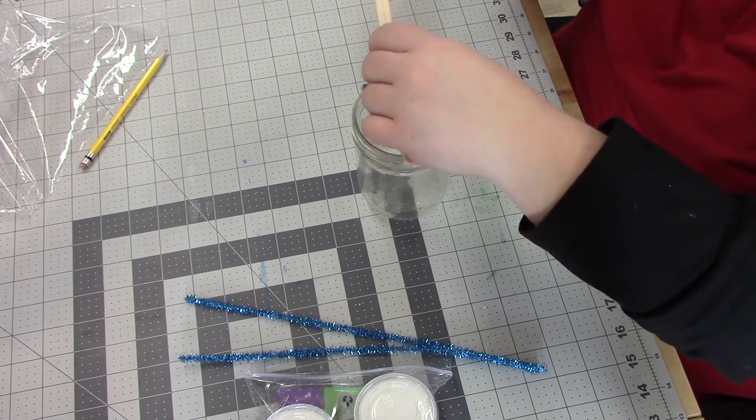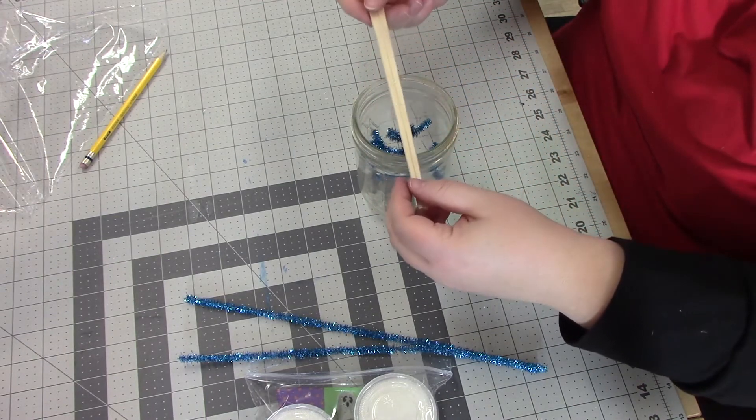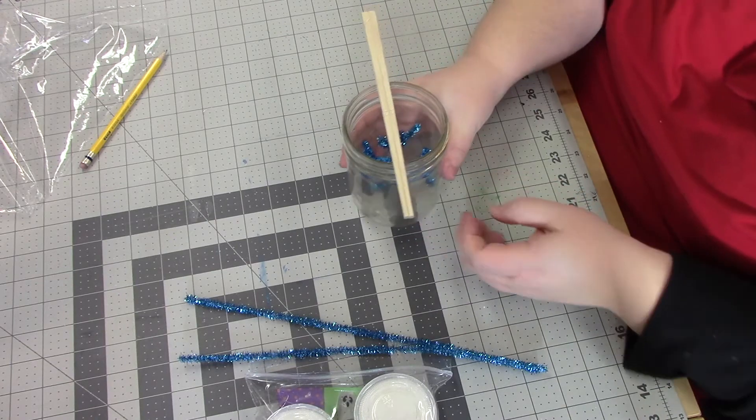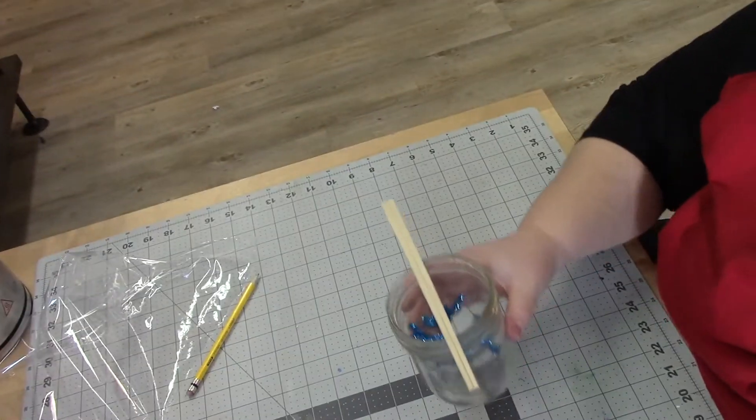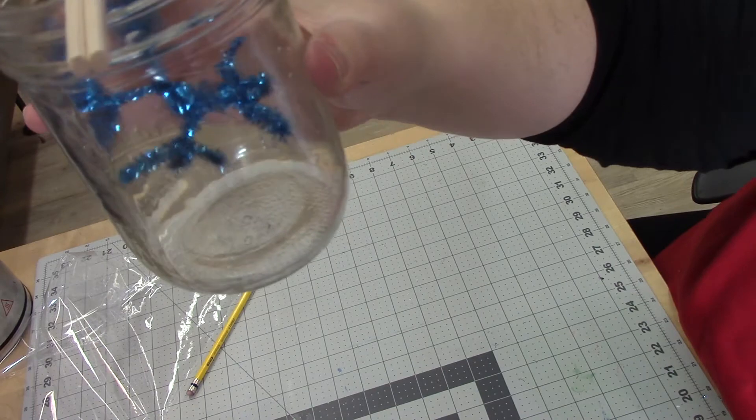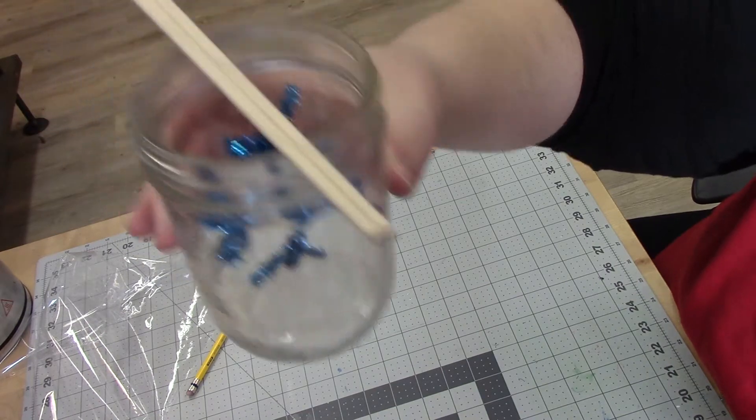And now when you lay your chopstick across your jar, your snowflake ought to dangle. Let's just show you what it looks like. So you want it to dangle without touching the bottom.